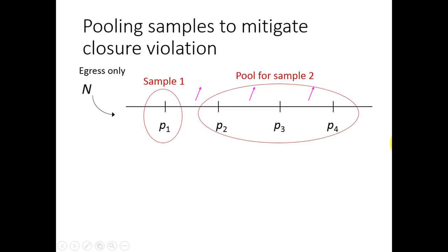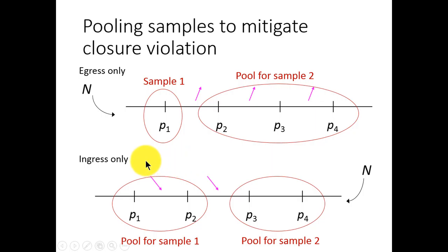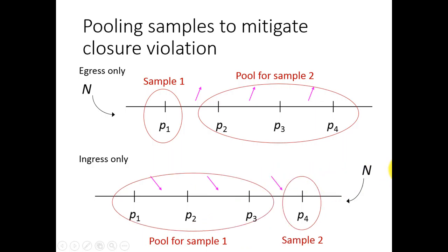Here are a few examples. For emigration only, if we pool before and after the egress begins, the two-sample Lincoln-Peterson estimator is unbiased. If immigration occurs between all the time occasions, then we can pool all but the first time occasion. For immigration only, if we pool the data before and after the egress begins, the Lincoln-Peterson estimator is unbiased. If there was no immigration between capture occasions three and four, then we would pool the data for the last two occasions. Otherwise, if immigration occurs between all the capture occasions, then we would pool all but the last occasion.